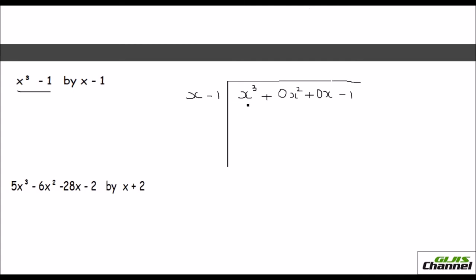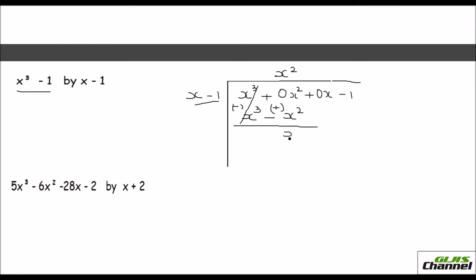Now again you have to check: you have x cubed here, so you have to multiply x by x squared to get x cubed. So you multiply with x squared. x cubed, and minus 1 times x squared is minus x squared. Now you need to change the sign — you have to subtract, so change the sign. This x cubed will get cancelled and you will have x squared here. Now bring down the next term.